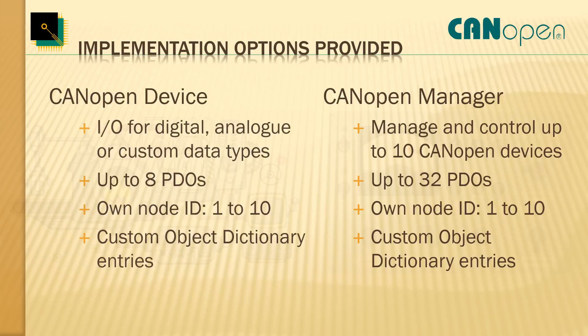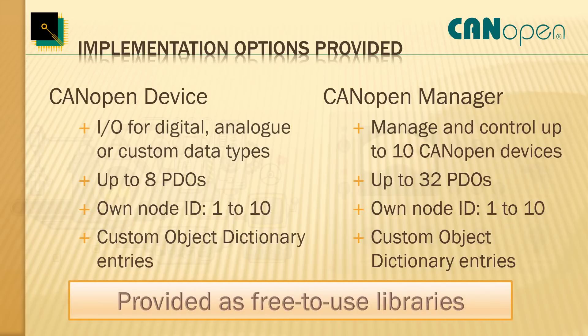Both libraries can be customized with their own object dictionary containing the communication parameters and process data variables for your application. The PDOs — Process Data Objects — are the CAN messages that transport data, and these are completely configurable. The libraries provided are free to use in your products as-is, giving you control of up to 10 CANopen devices in your network. Embedded Systems Academy also offers commercial versions of these libraries supporting up to 127 nodes as specified in the CANopen documents.